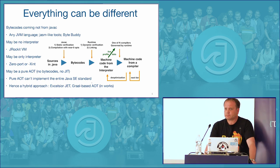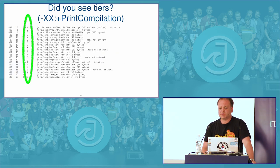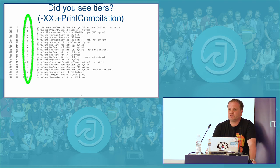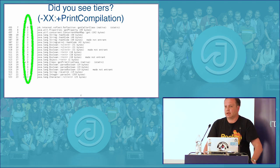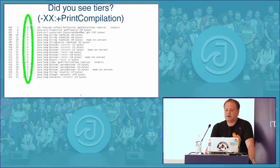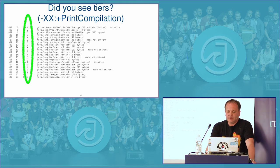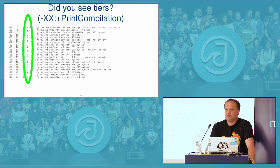I mentioned compilation tiers. Let's say you run Java with something simple like Hello World and specify the -XX:+PrintCompilation option on the command line. You will see which methods are being compiled — the timestamp, the compilation number — and numbers from 0 to 4, which are the compilation tiers.